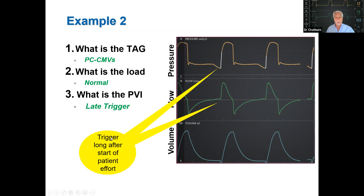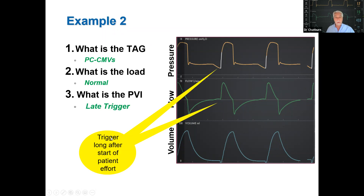Here we have evidence of a late trigger. The patient made an inspiratory effort — visible in both the pressure and flow waveforms — but it took a long time for the ventilator to catch up. On this particular ventilator, you can see it's a pressure trigger because the ventilator indicates a white section on the pressure waveform; if it had been a flow trigger, the white section would be on the flow waveform instead.